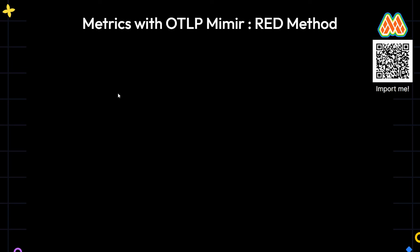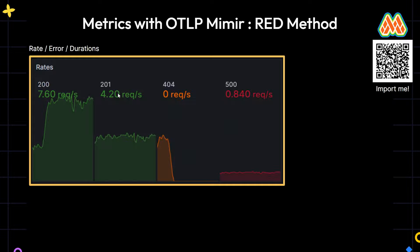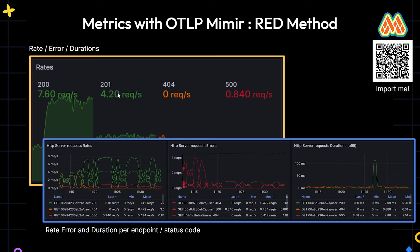Once we have set up the stack, it becomes important to focus on errors. I'm going to introduce the RED method, which stands for Rates, Errors, and Durations. With only these three metrics, you get a quick overview of the health of your application. If you want to go deeper, you can analyze per endpoint and per HTTP status on each panel — focusing only on errors and focusing only on durations. It's pretty handy to have a quick overview across all your applications and all runtimes or languages.